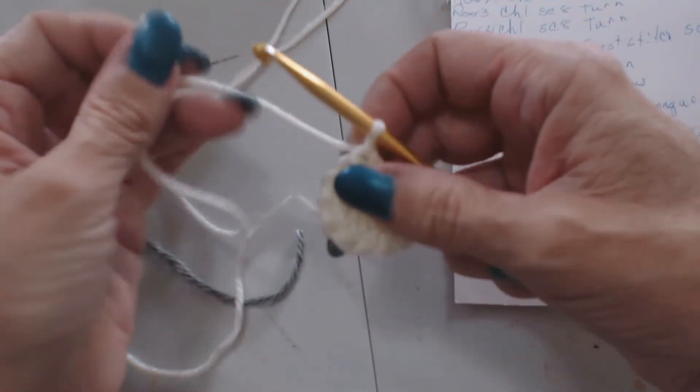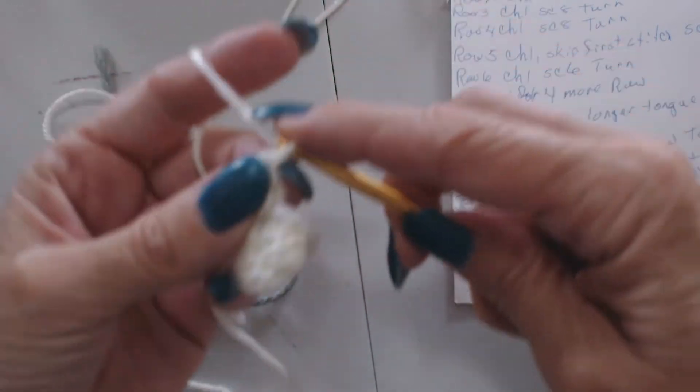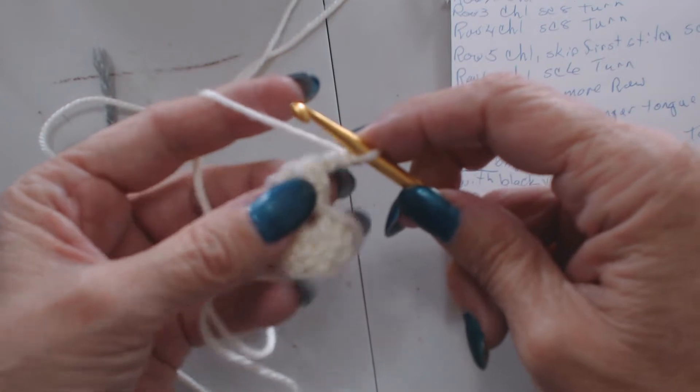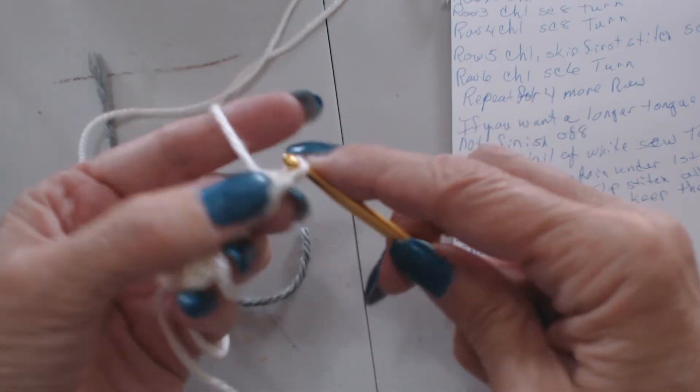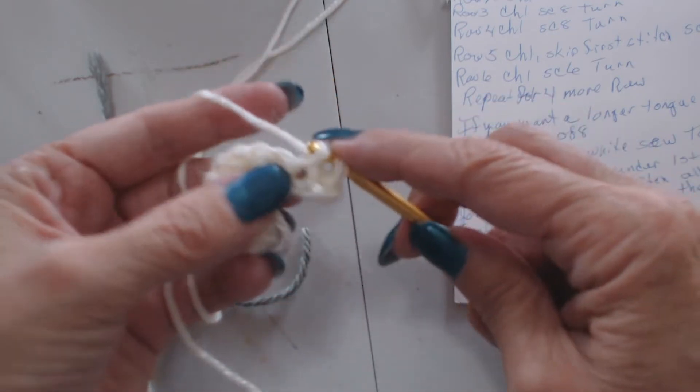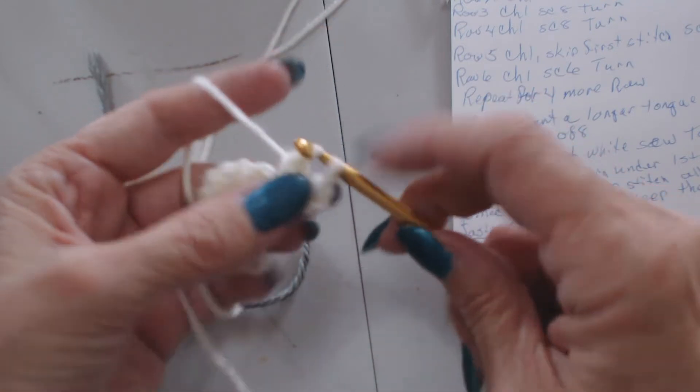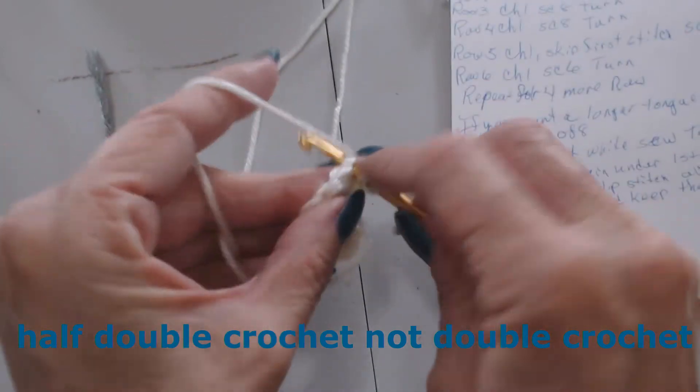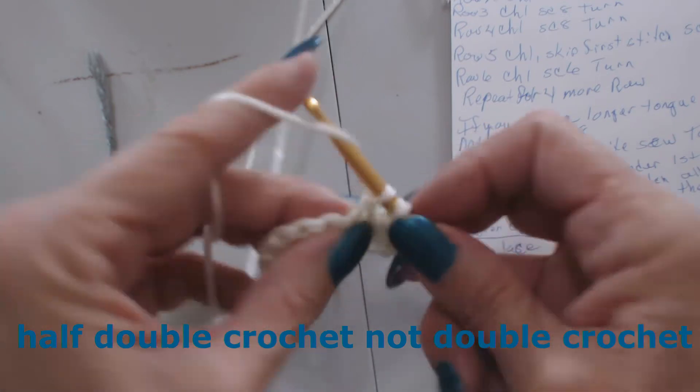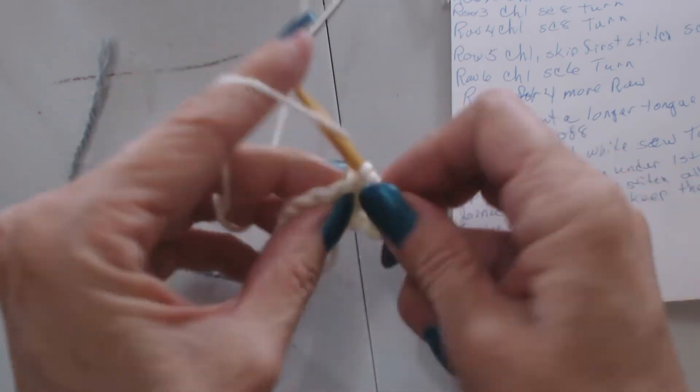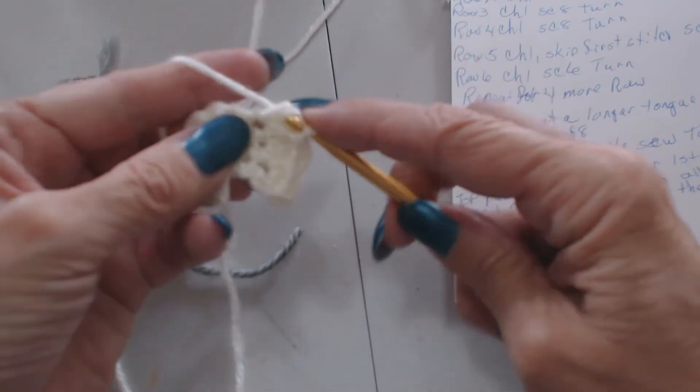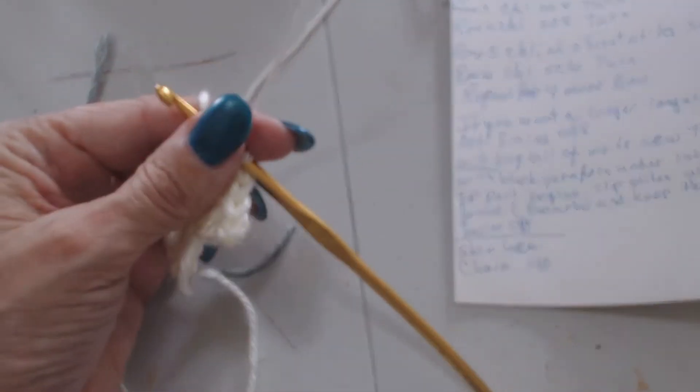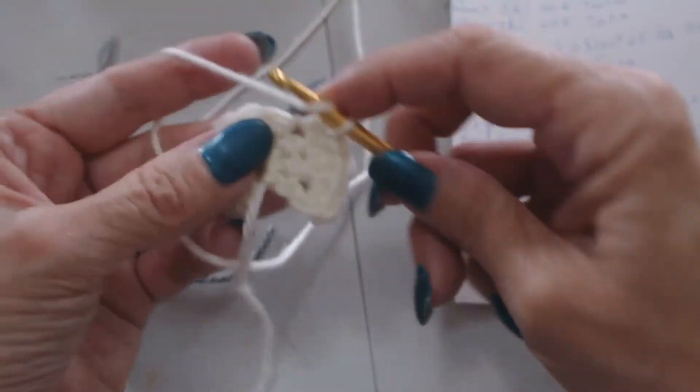Now from here I turn and I chain two and I do two half double crochet in the first stitch. Now I do a double crochet and I do two half double crochet in the next one. And I do that around to the end, to the other side.